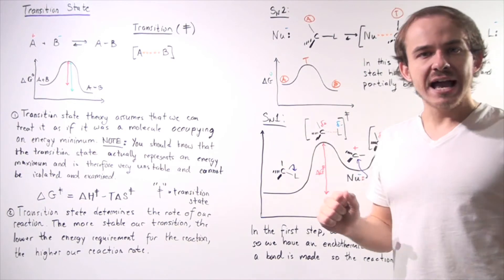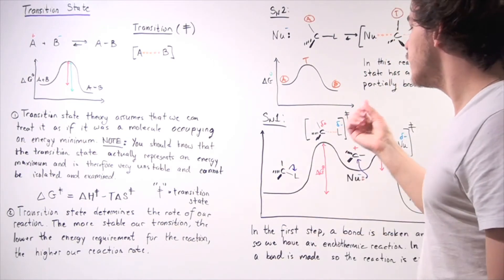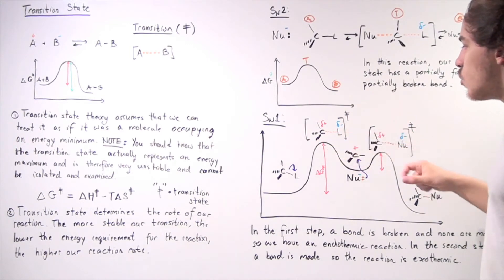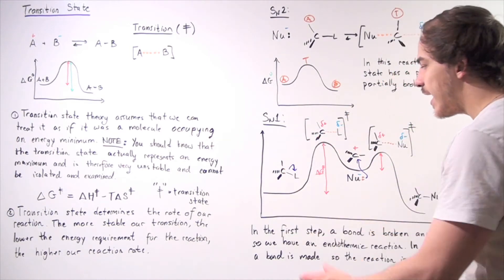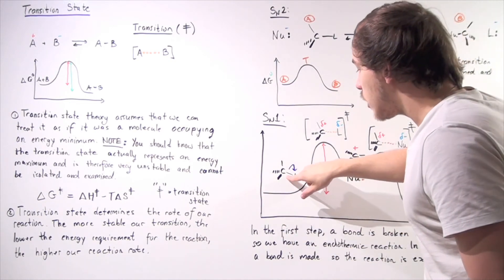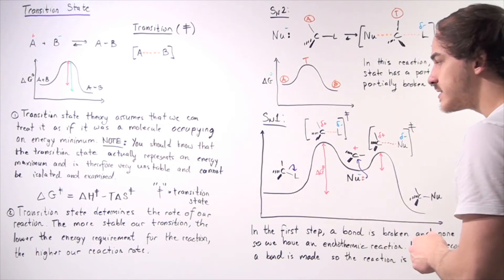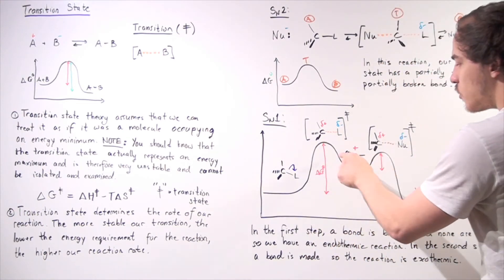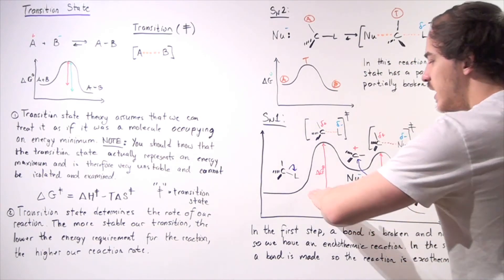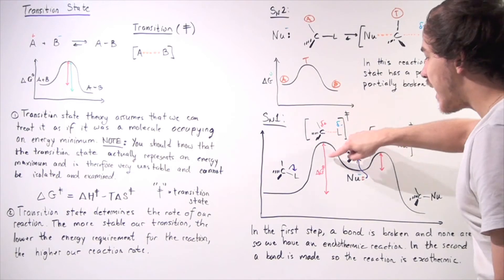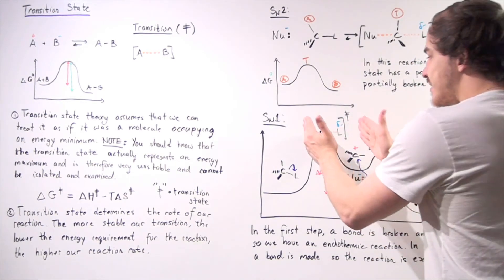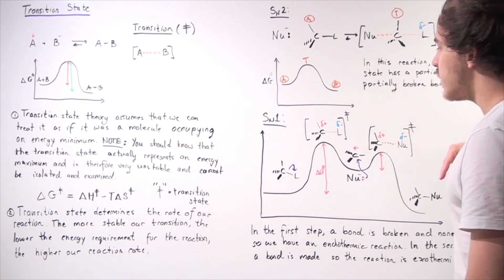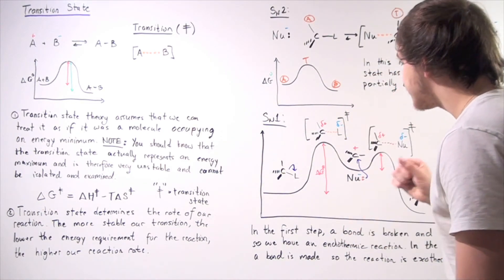Now let's examine the SN1 — substitution nucleophilic unimolecular — reaction. This reaction has not one but two steps, meaning we will have two energy maxima and two transition states. In the first step, the carbon–leaving group bond breaks — the leaving group dissociates. Because a bond is broken and none are made, this step is endothermic, so the intermediate carbocation is at a higher energy level than the reactant. Examining the first transition state, we see a partially broken bond between carbon and the leaving group; the leaving group develops a partial negative charge and the carbon develops a partial positive charge.